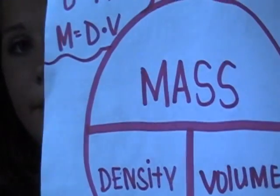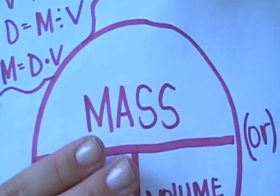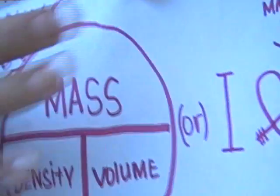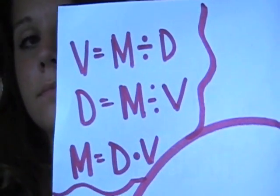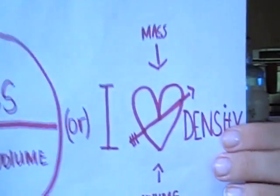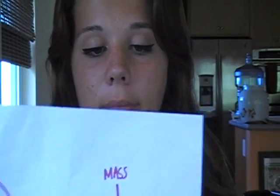So yeah — that's how to use the circle thing. Just cover up what you're trying to figure out and there's your equation. Or you can copy it down. Make it simple: just cover up the variable you're trying to solve. Mass divided by volume is how you get density.